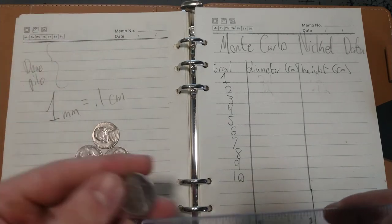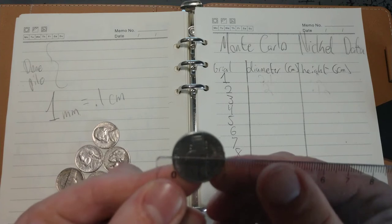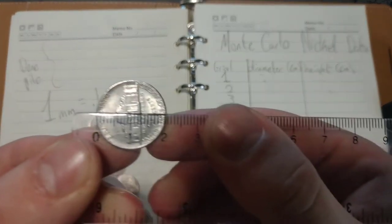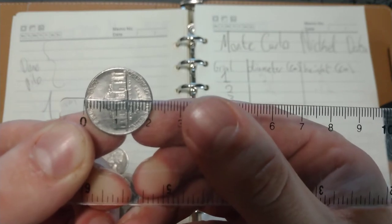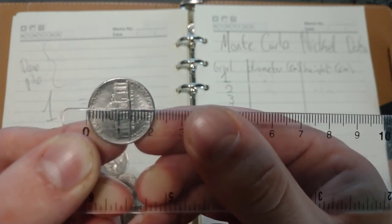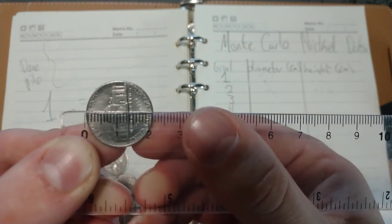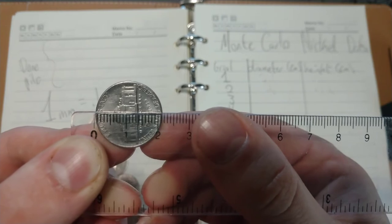Start with number 1. Line it up halfway. That looks like 2.1 and just a little over here. Let's see, 2.12.